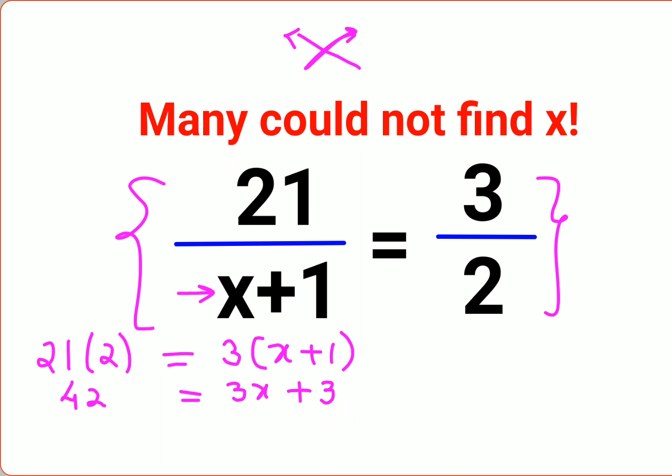The next step is to subtract 3 from both sides. Why? Because we need to find the value of x. So we keep just 3x on the left-hand side, and we get 39.